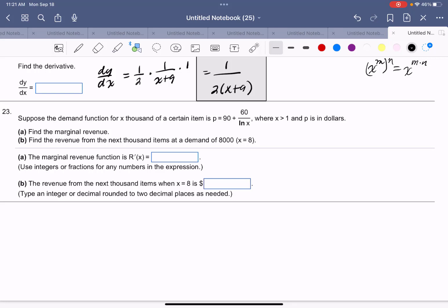Example number 23. Suppose the demand function for x thousand of a certain item is p equals 90 plus 60 divided by ln x, where x is greater than 1 and p is in dollars. Find the marginal revenue.